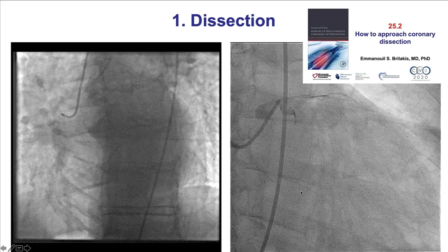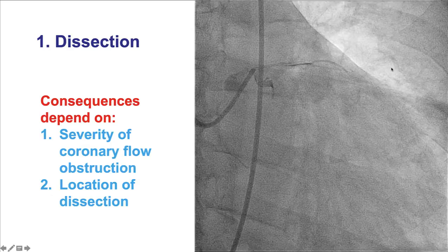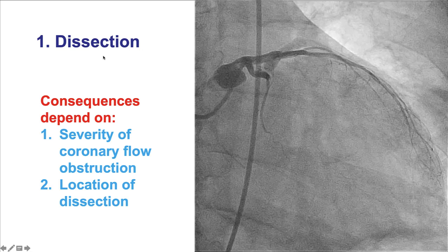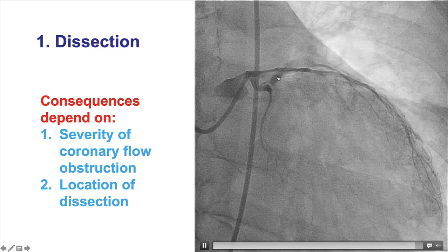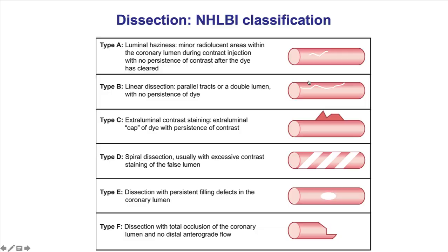A brief overview in this video of the potential causes, starting with dissection. There will be a separate video dedicated to dissections. But broadly, dissection can have various complications depending on the location, as well as how badly coronary flow is affected. There is a classification of dissections, the NHLBI, categorizing them from type A to type F.